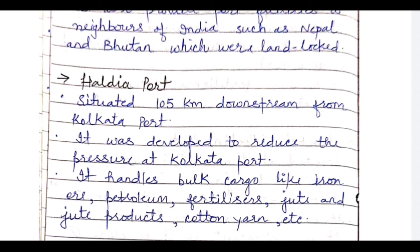The next port on the East Coast, developed close to Kolkata, is Haldia port, located 105 km downstream from Kolkata port. It was developed to reduce pressure on Kolkata port. Now Kolkata itself is losing advantage and more import-export is done through Haldia. It handles bulk cargo like iron ore, petroleum, fertilizers, jute and jute products, cotton yarn, etc. Jute is a very important commodity in the West Bengal and Bangladesh region.